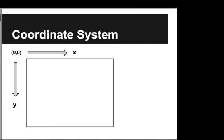The first thing to know about the canvas is the way the coordinate system works. It's a little different than your normal coordinate system. In the top left we have 0,0 — going right horizontally is the x direction and going down vertically is the positive y direction. For example, the point (100, 200) is over 100 in the x direction and down 200 in the y direction.